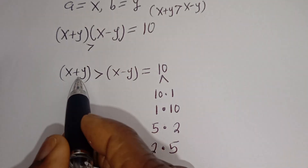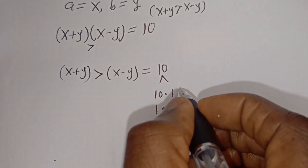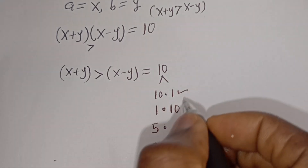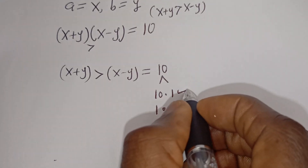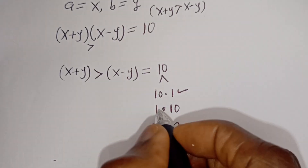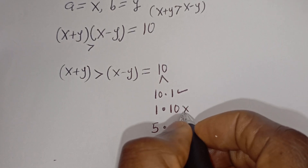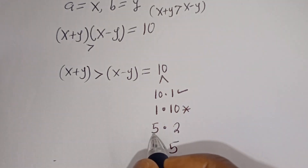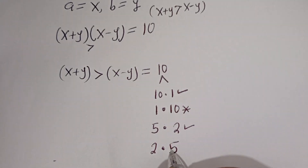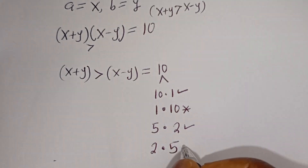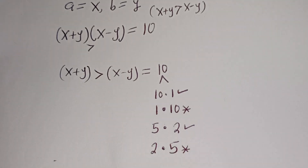But since X plus Y must be greater than X minus Y: 10 greater than 1 — this is accepted. 1 less than 10 — this is rejected. 5 greater than 2 — this is accepted. 2 less than 5 — this is rejected.